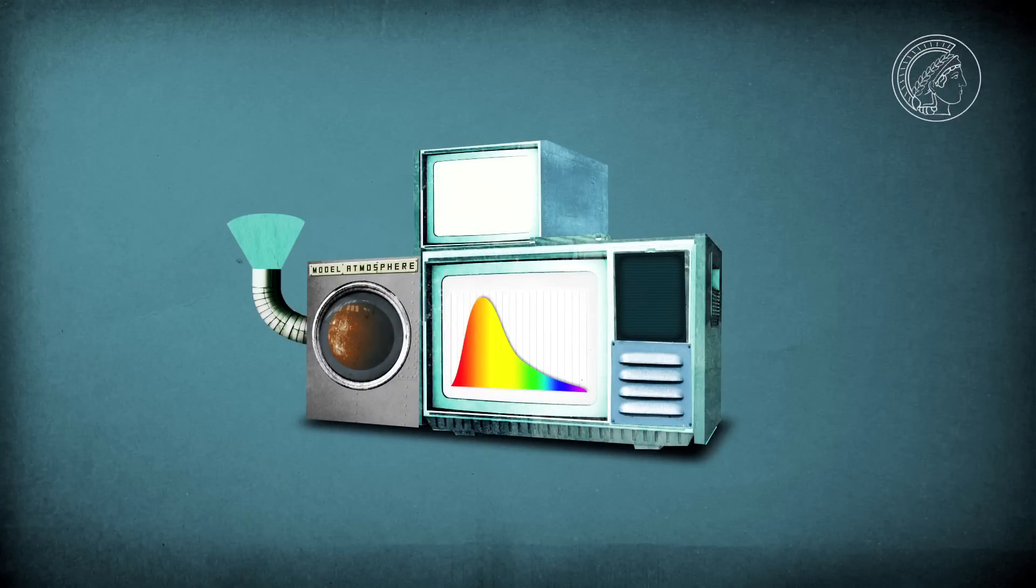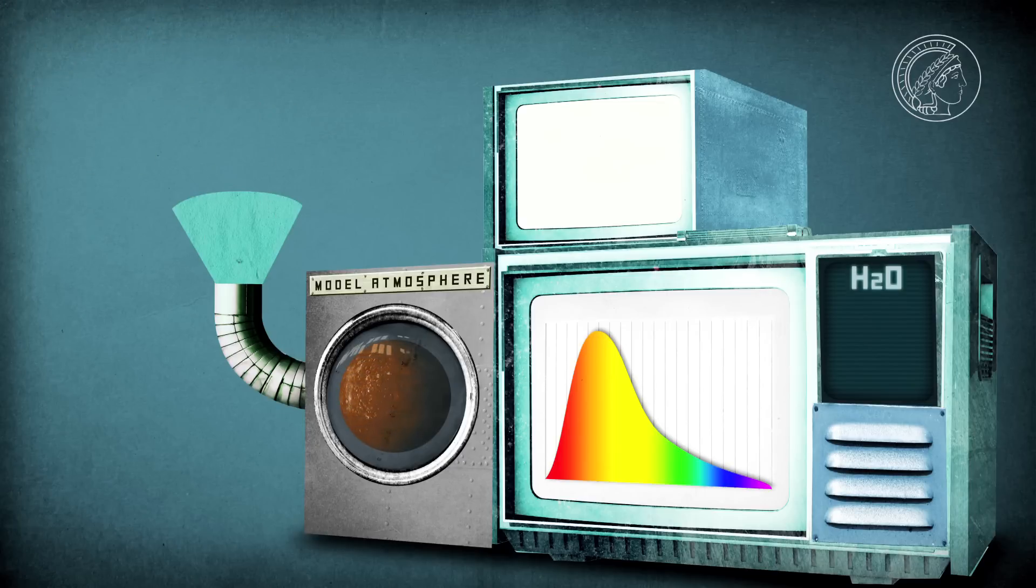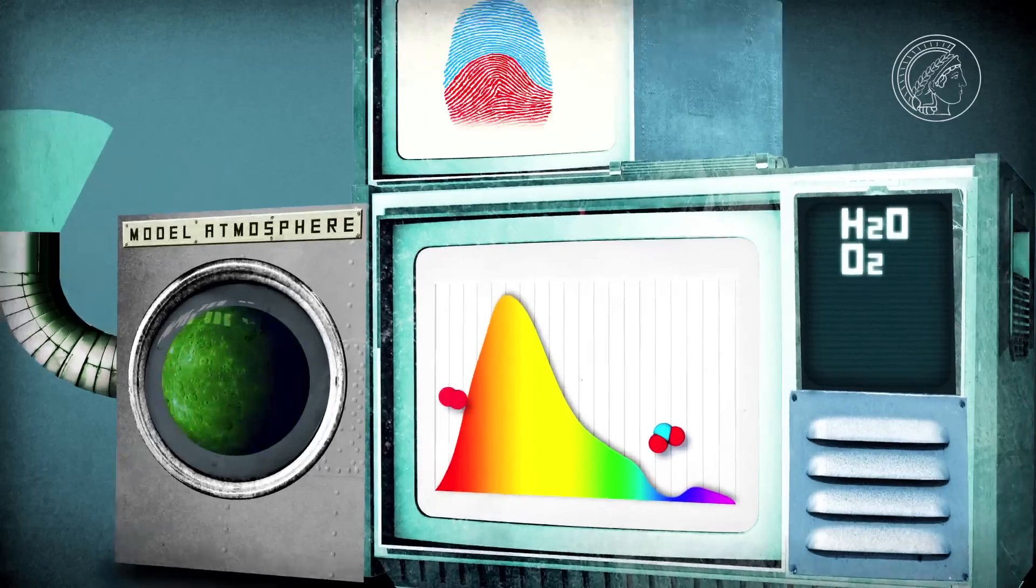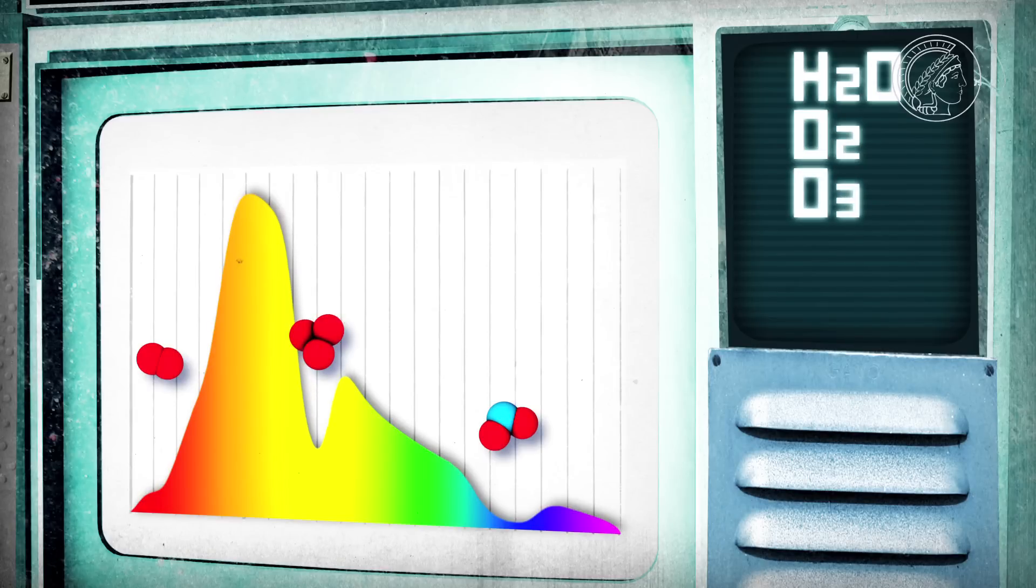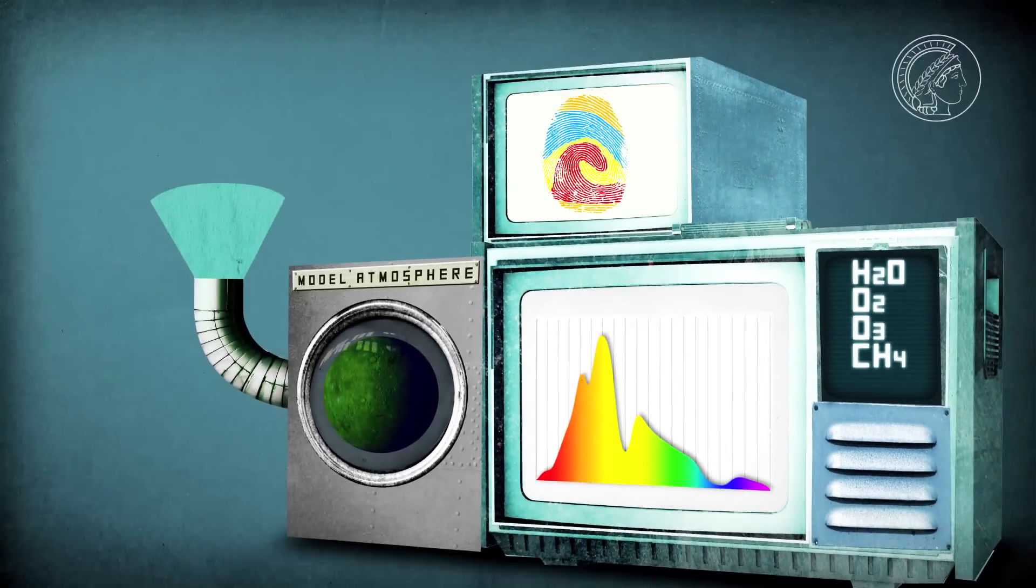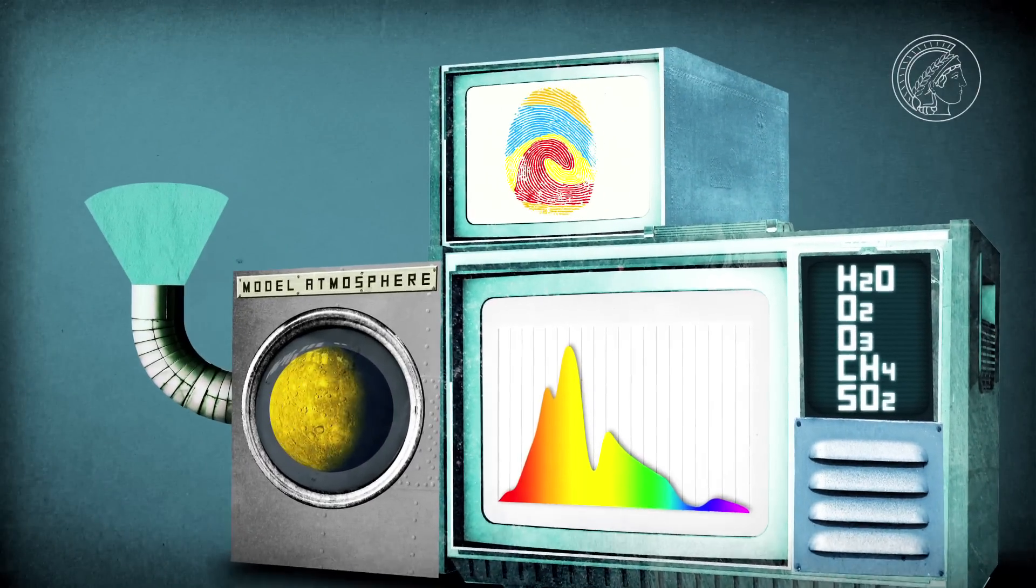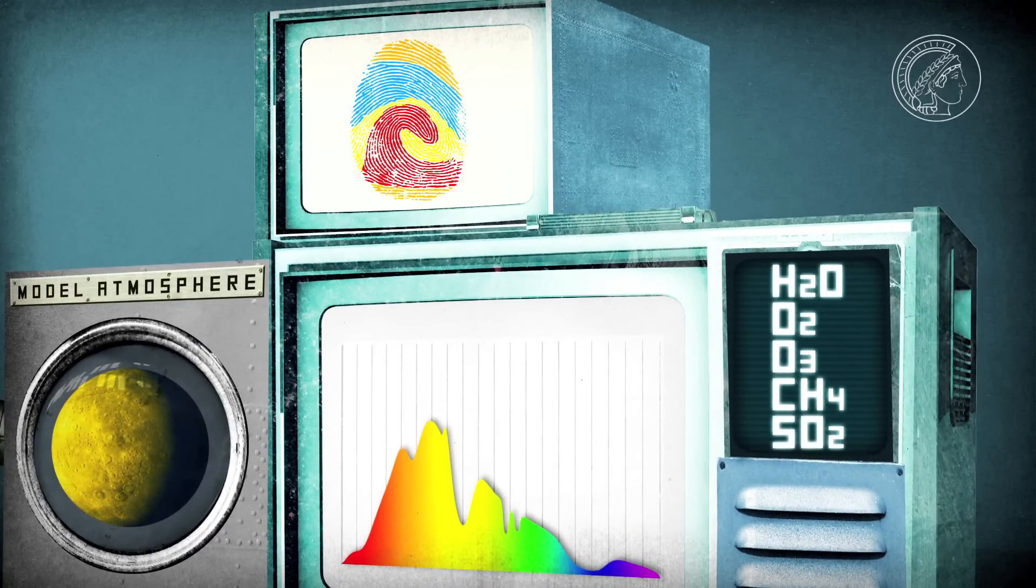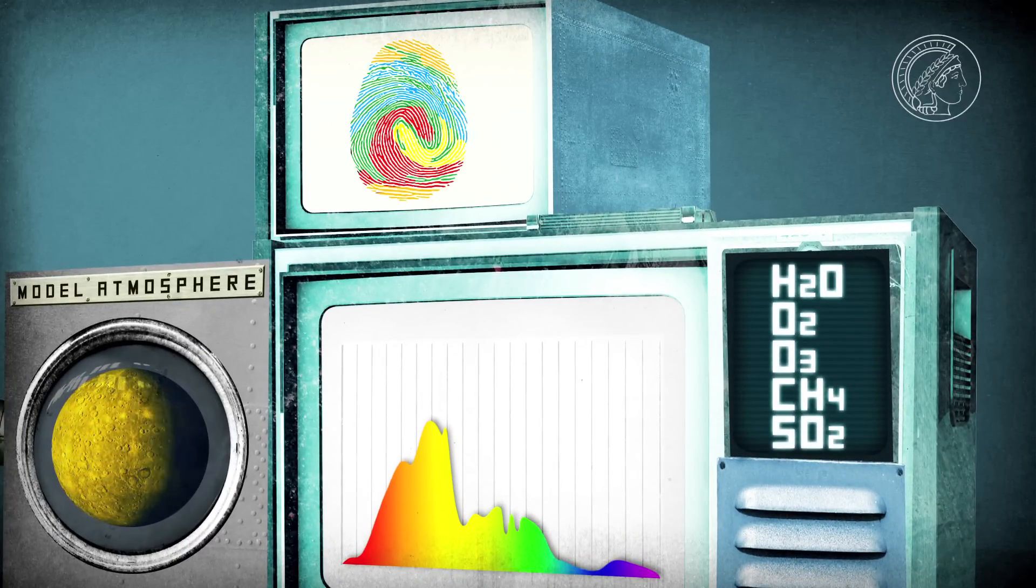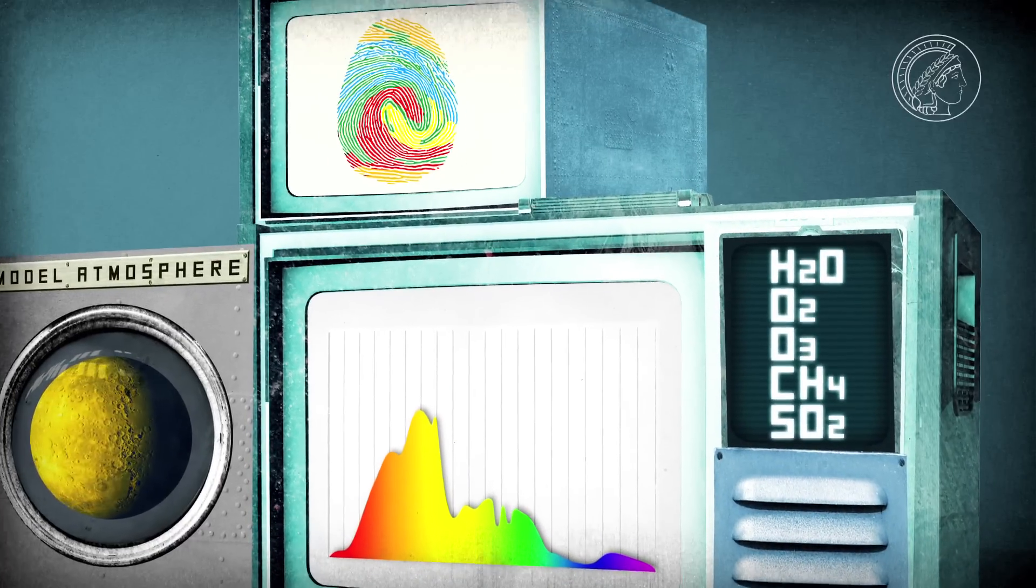Curtain up for the atmosphere model. The scientists feed their model with the physical data - for example, of water, oxygen, ozone, and methane - and they calculate the relevant spectrum. Now they are also adding sulfur dioxide and other inorganic compounds. The model can now supply spectra that are increasingly complicated and more difficult to interpret.